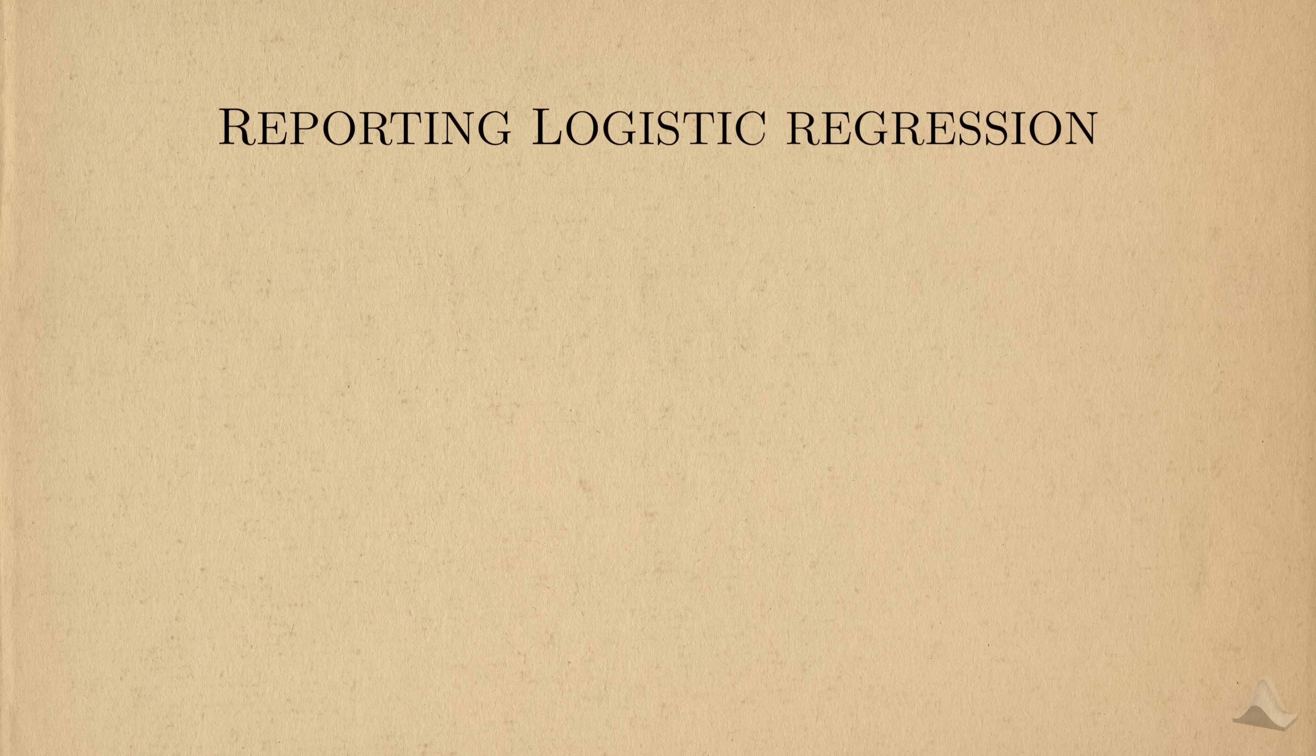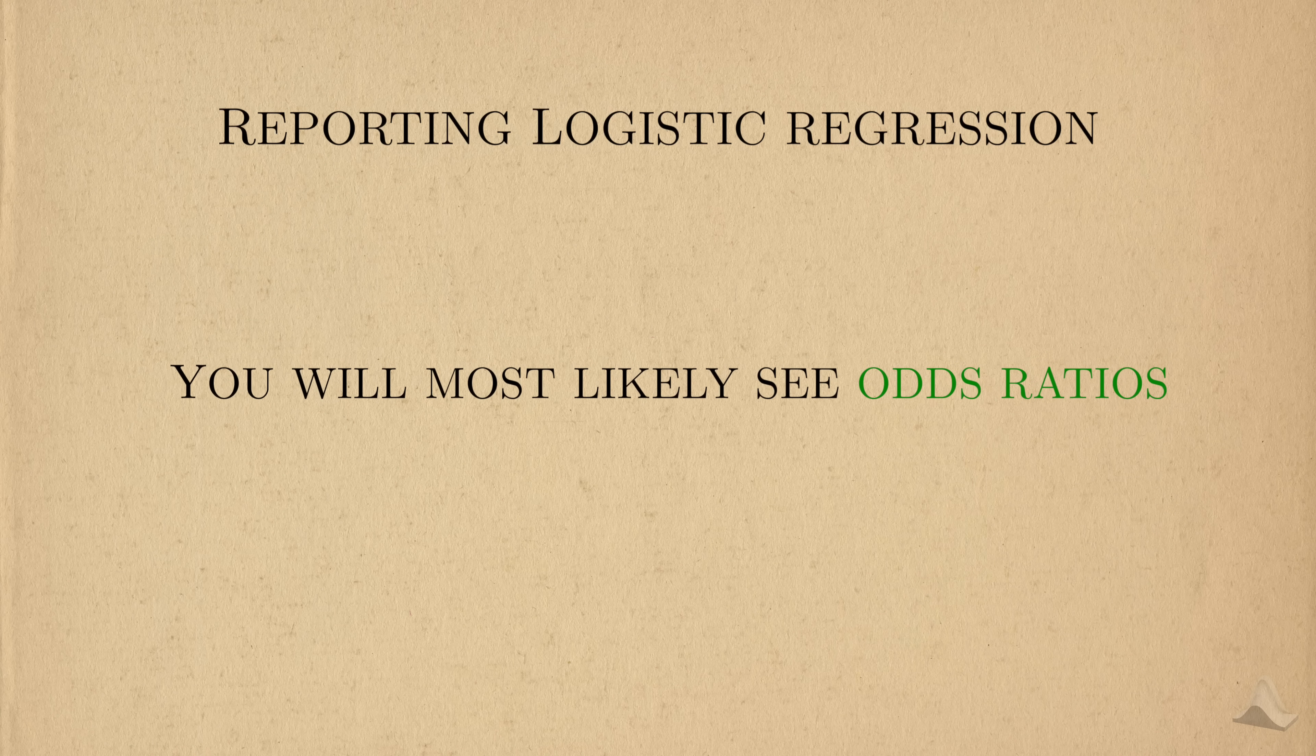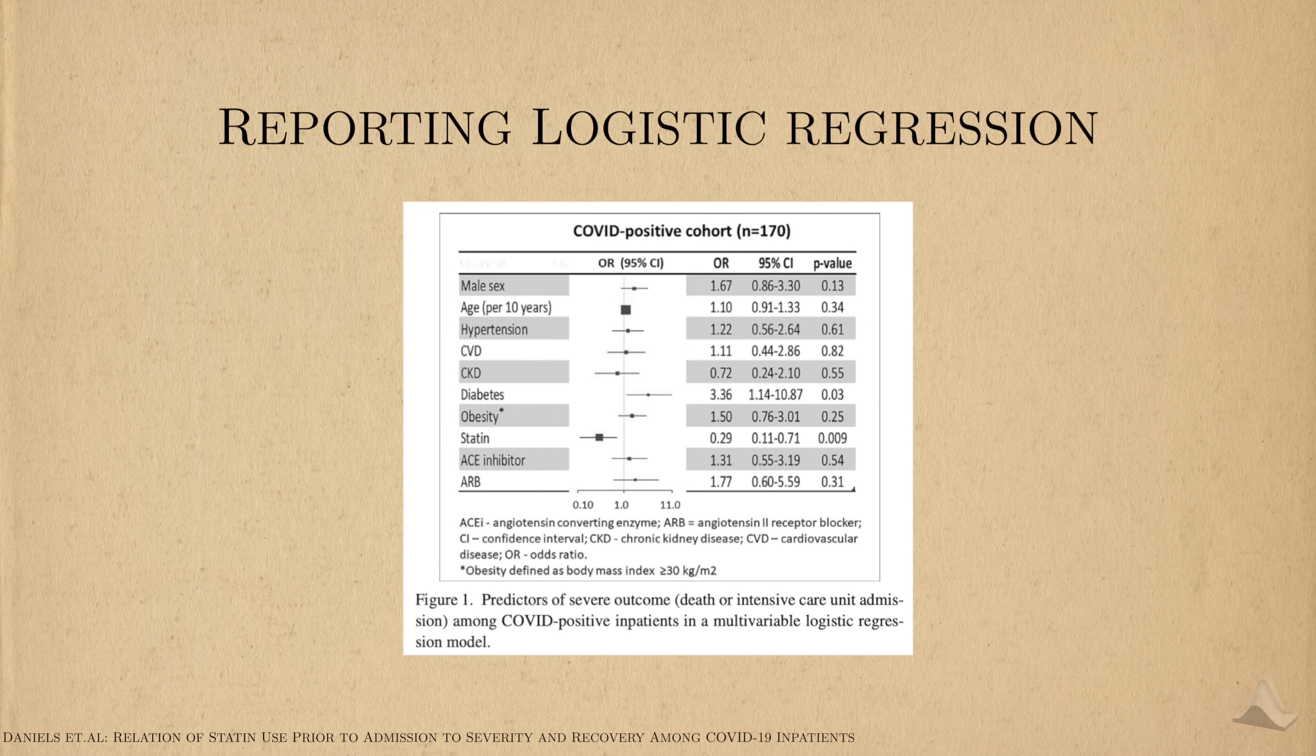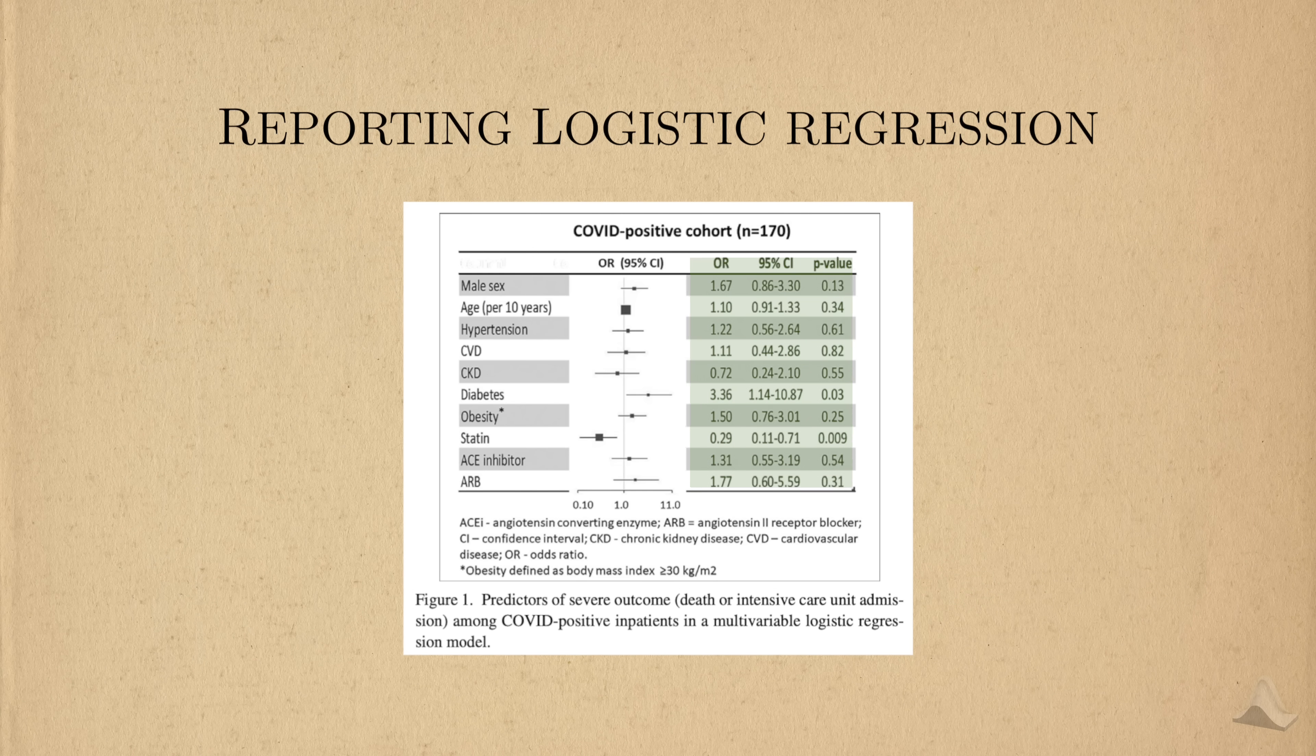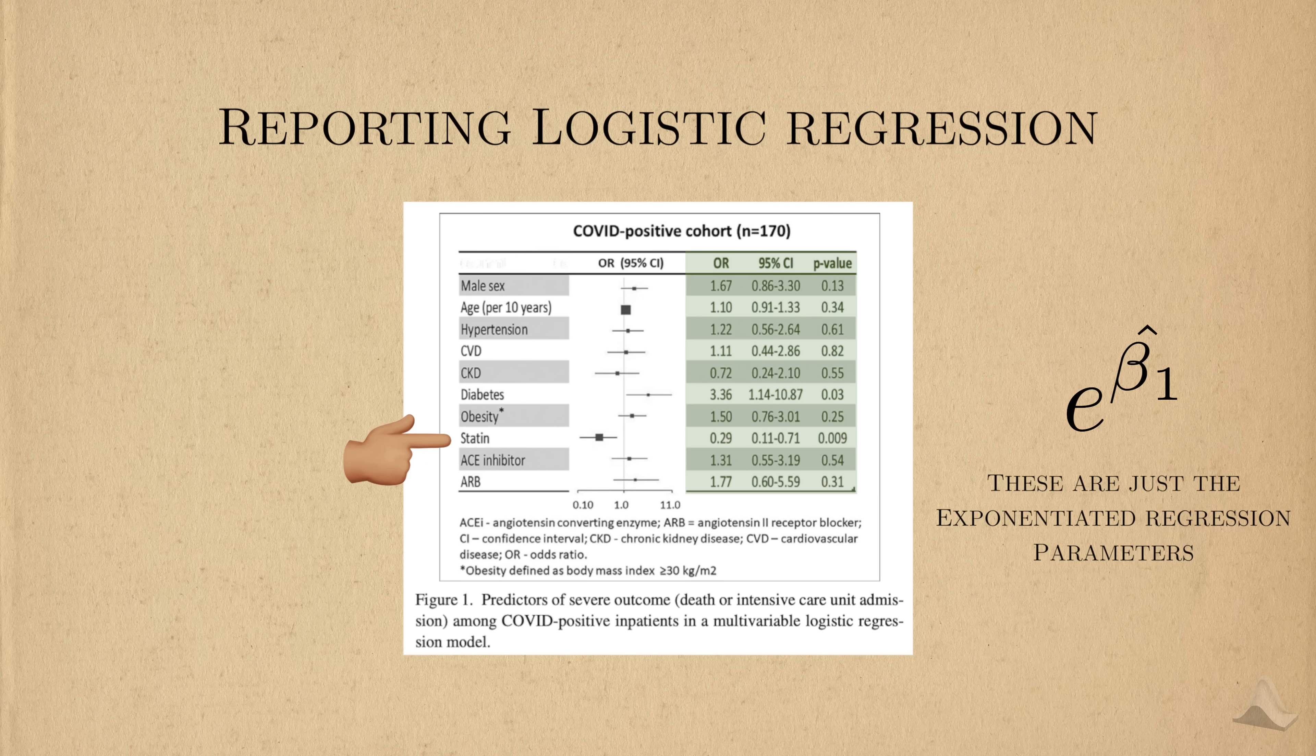When we talk about the parameters of logistic regression in actual research and research papers, we most commonly report them in terms of the odds ratio. Here's a result from a real-life paper on COVID that uses logistic regression. The acronym here stands for odds ratios. Each of these odds ratios are just the estimated parameters associated with each of these covariates in the logistic regression, exponentiated by e.